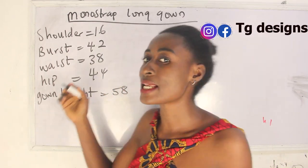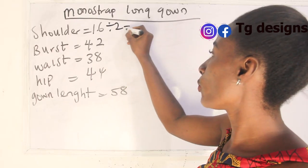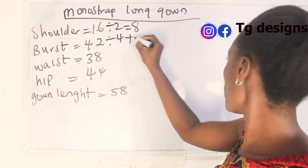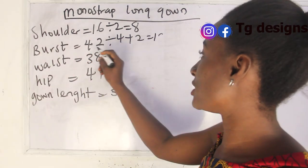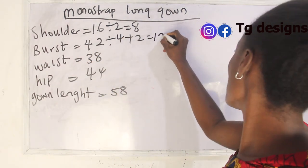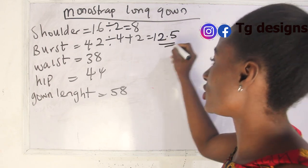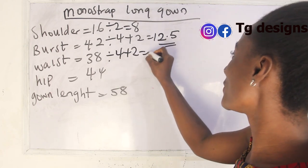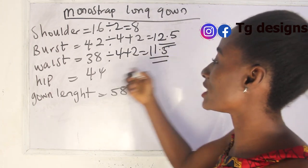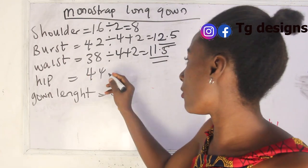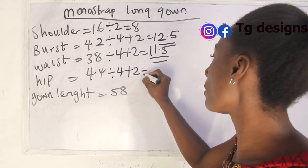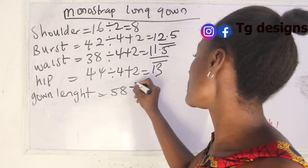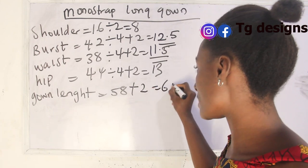Let's calculate our measurements. Shoulder is 16 divided by 2, giving us 8 inches. Bust is 42 divided by 4 plus 2, giving us 12.5 inches. Waist is 38 divided by 4 plus 2, giving us 11.5 inches. Hip is 44 divided by 4 plus 2, giving us 13 inches. Gown length is 58 plus 2, giving us 60 inches.